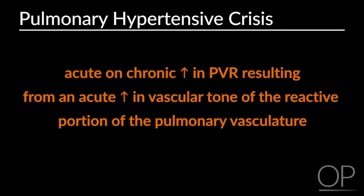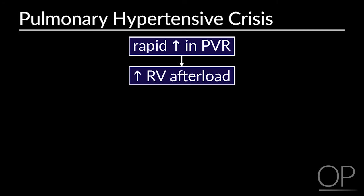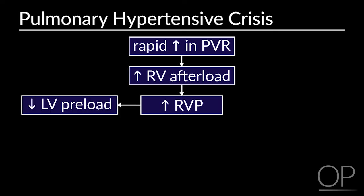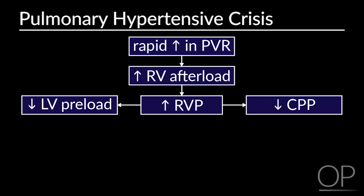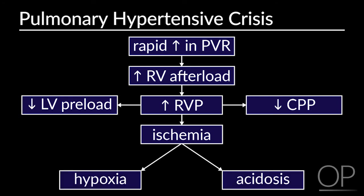When a patient with pulmonary hypertension decompensates, the first thing on your differential should be a pulmonary hypertensive crisis. It is defined as an acute on-chronic increase in pulmonary vascular resistance resulting from an acute increase in vascular tone of the reactive portion of the pulmonary vasculature. A rapid increase in pulmonary vascular resistance leads to increased right ventricular afterload, causing RV pressure to rise, which decreases left ventricular preload and coronary perfusion pressure, eventually causing ischemia, hypoxia, and acidosis — further perpetuating this cycle.